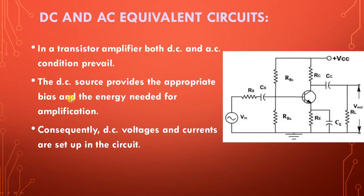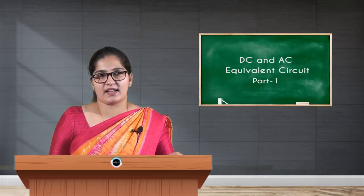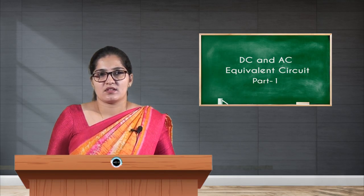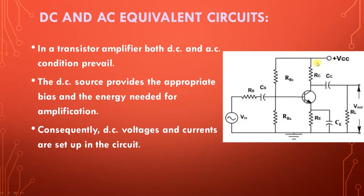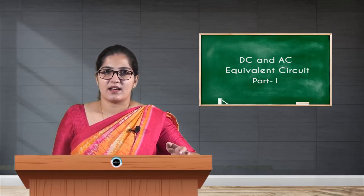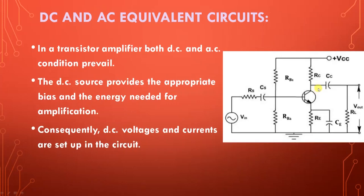The DC source provides the appropriate bias and the energy needed for amplification. The DC supply is required because it provides the bias of the transistor and the energy needed for amplification. So in this CE amplifier circuit, the DC supply provides bias voltage for the transistor, and any small signal applied at the base will be amplified at the collector.